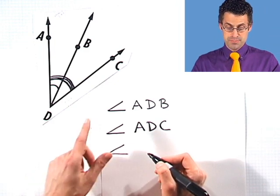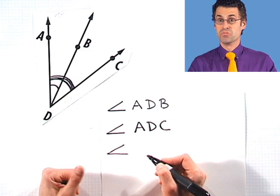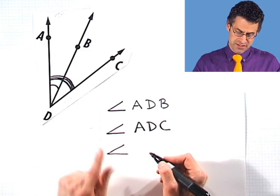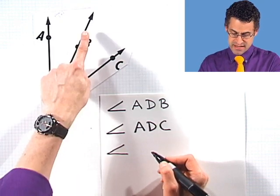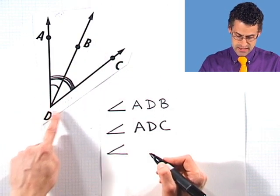Now would I say angle B, C, D? No. Because remember, the center letter has to be that common endpoint. So I'd say B, D, C.